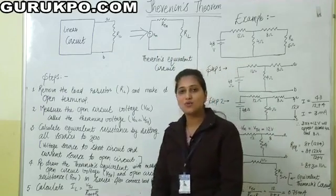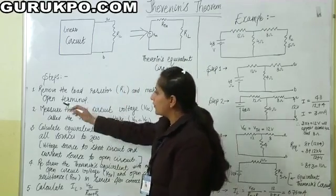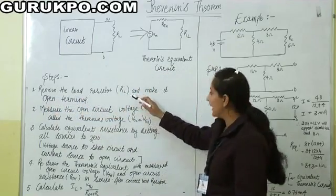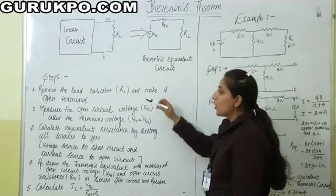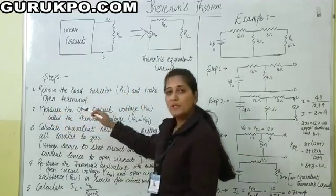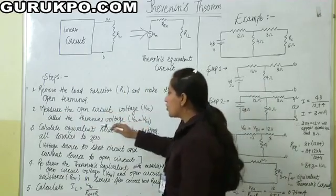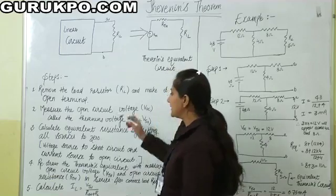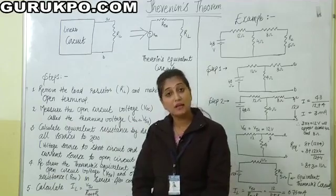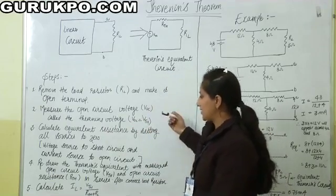Here are some steps to solve the Thevenin's circuit. Step 1: First of all, we have to remove the load resistor RL and make it an open terminal. Step 2: Measure the open circuit voltage VOC and call it Thevenin's voltage. That means open circuit voltage is our Thevenin's voltage, so VOC equals VTH.